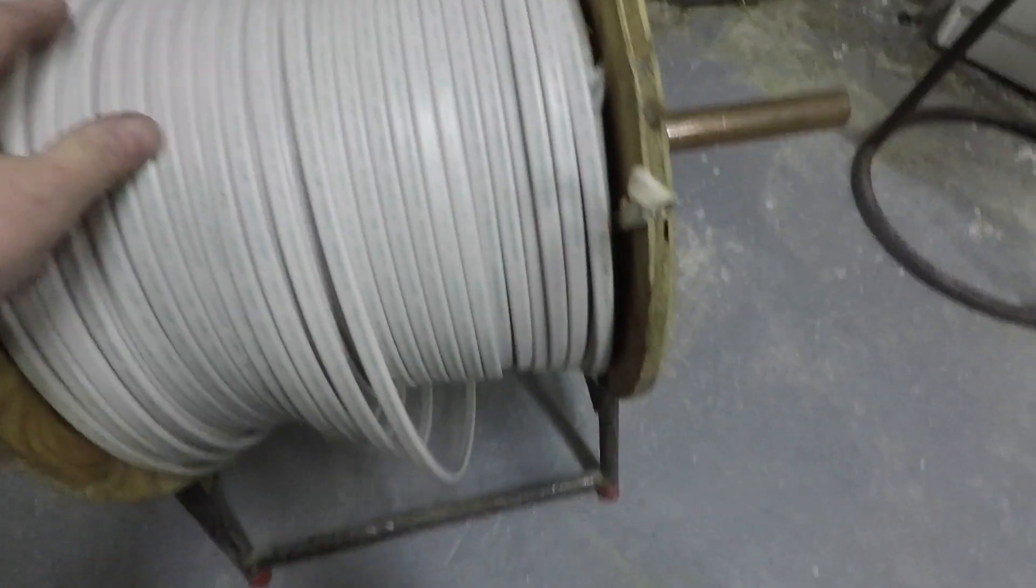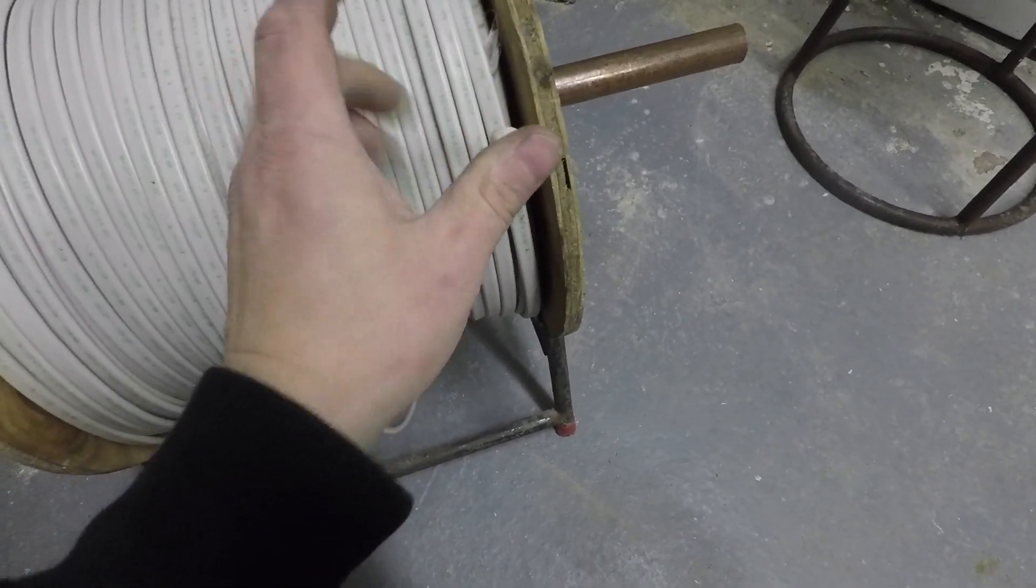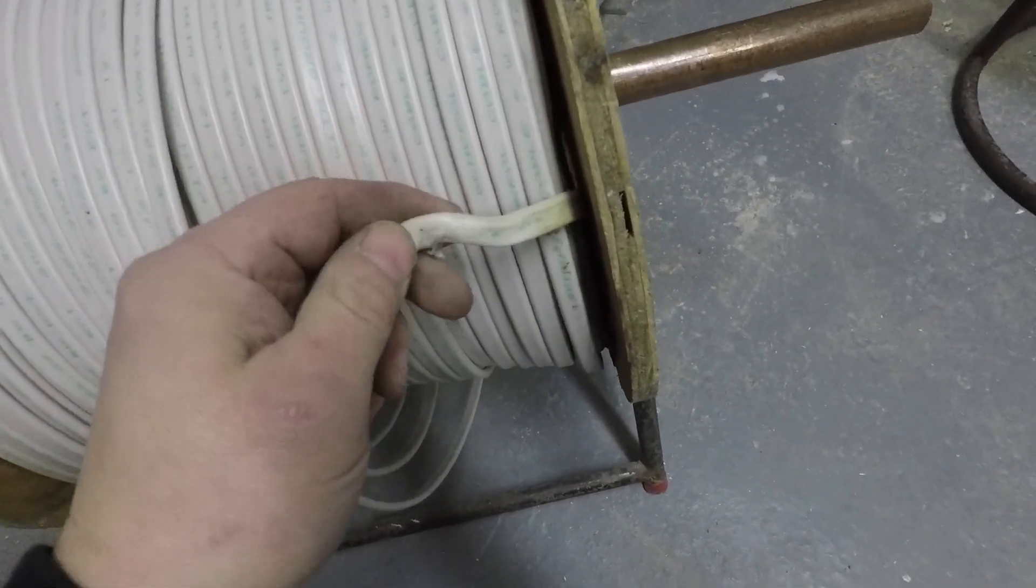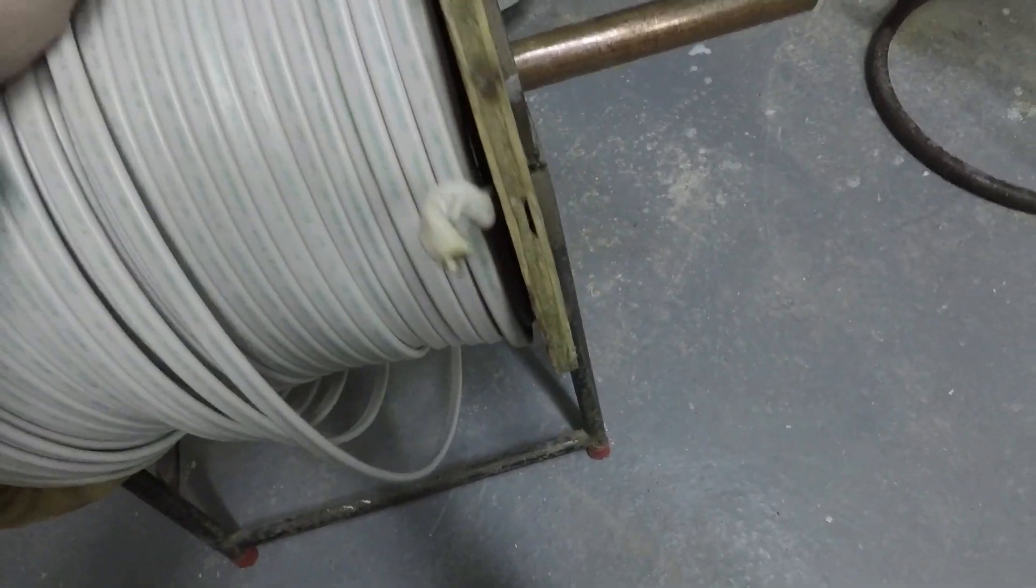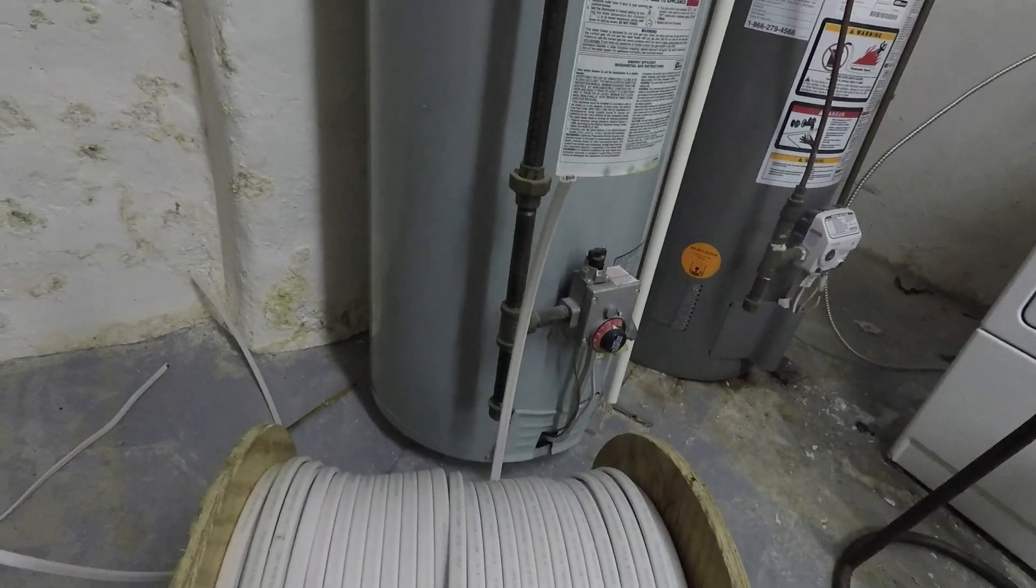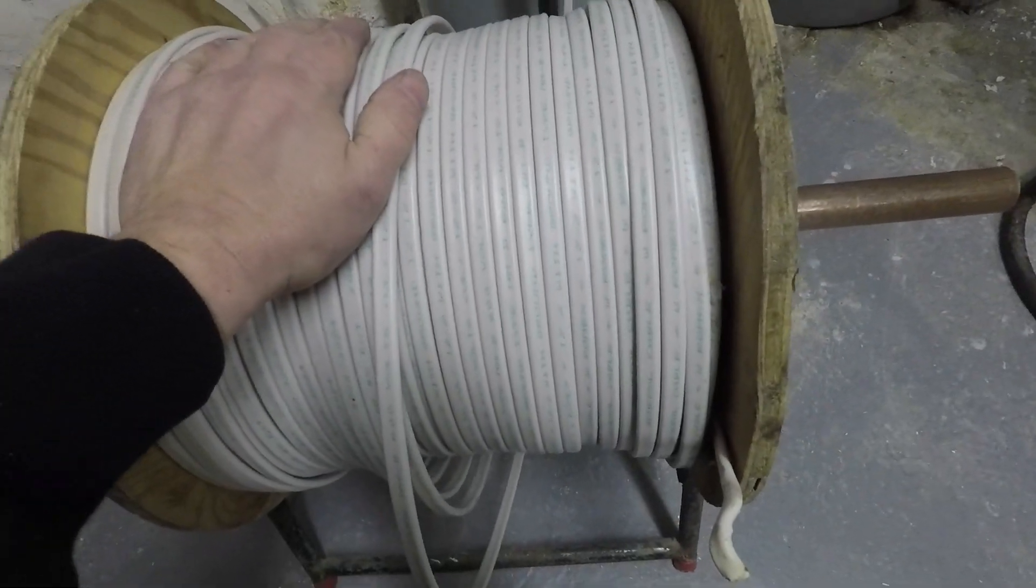Even on the 1,000-foot spools, they have a little pigtail here that they bring out that's in the bottom of this spool, so you can grab that and get your reading from that. And then on the other end, you just find the end that you're going to wire with. And that's how you would check 1,000-foot spools.